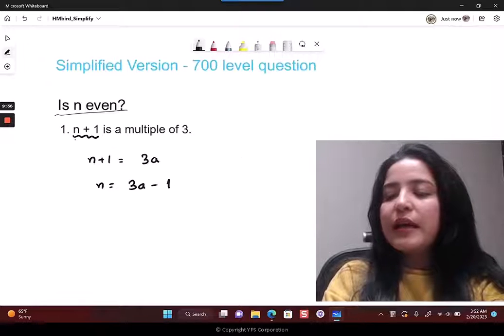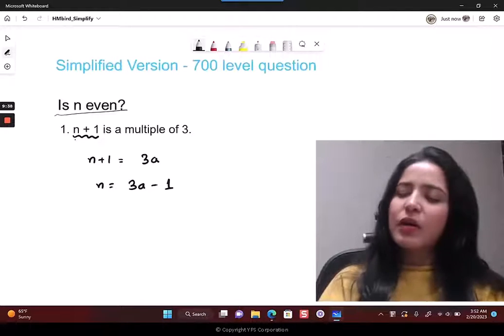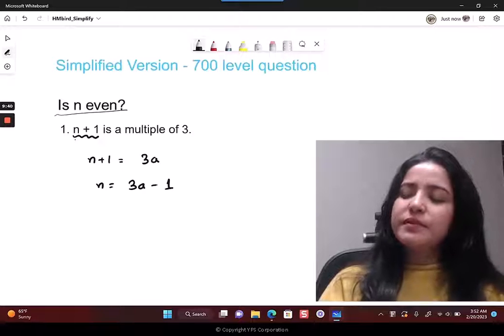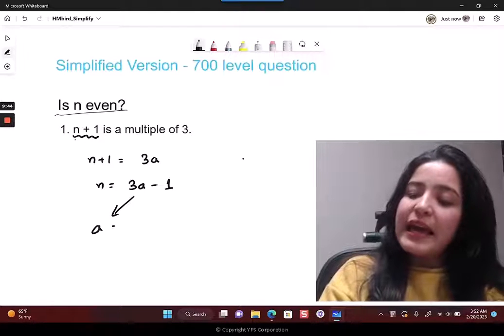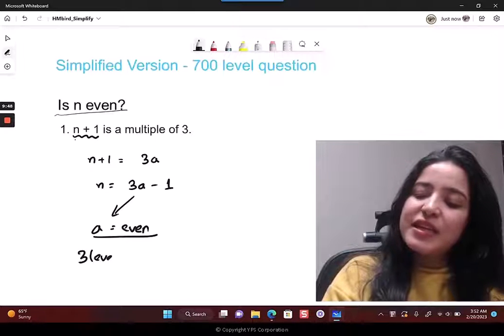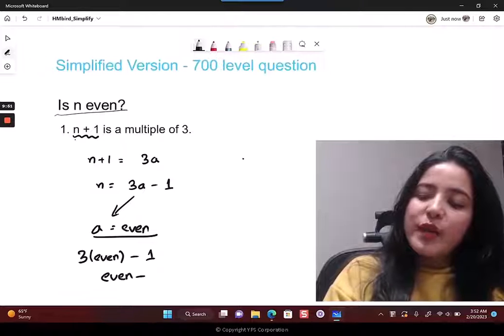We're given that n plus 1 is a multiple of 3. So being a multiple of 3, you can say n plus 1 is equal to 3 times something - say 3a, where a is some integer. So n is going to be 3a minus 1.